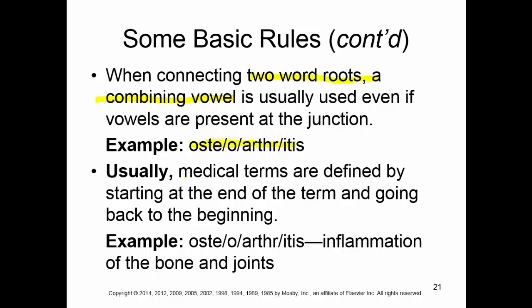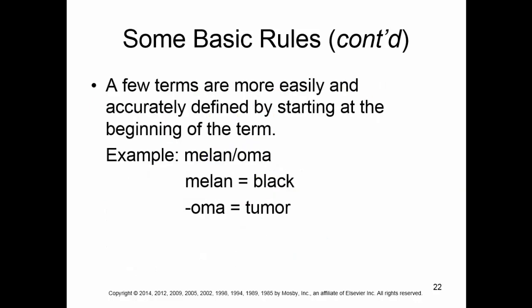For example, osteoarthritis: we start with the suffix first. Itis is the suffix and means inflammation. Then we have a word root, a combining vowel, and another word root. So we have inflammation of the bone — osteo — and joints — arthro. That's how you break that down.